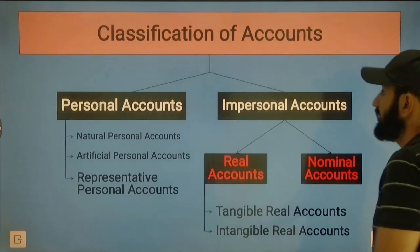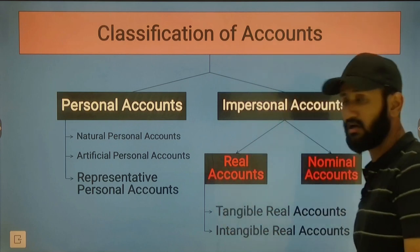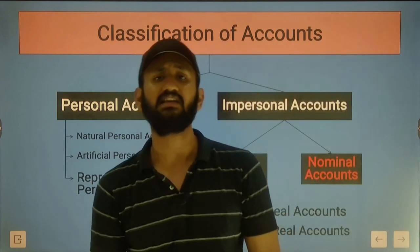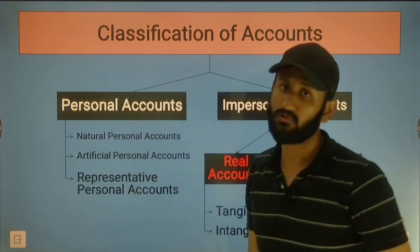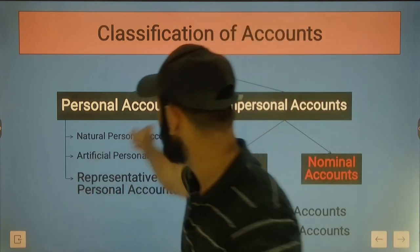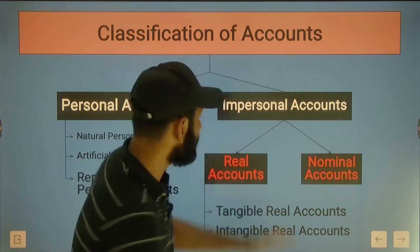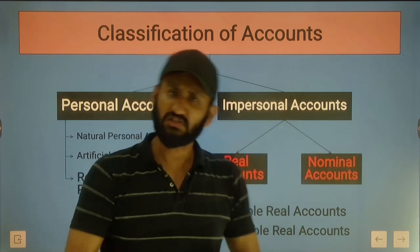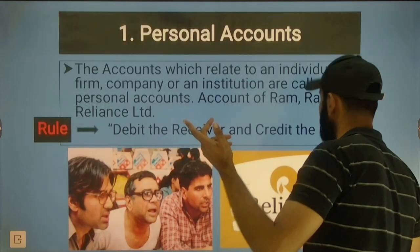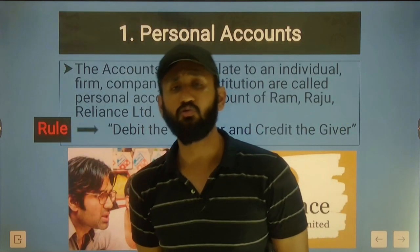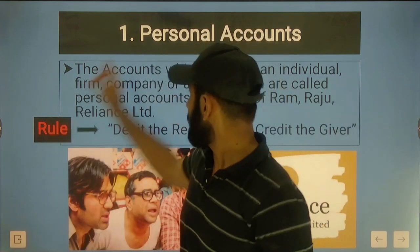These are the rules of the Double Entry System's English approach. The English approach has three rules: one is the rule for personal account, one for real account, and one for nominal account. Accounts are divided into two parts - personal accounts, which are accounts of any person (Ram, Shyam, Heena, Meena), and impersonal accounts, which are not accounts of any living person.